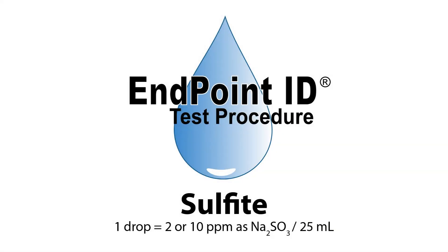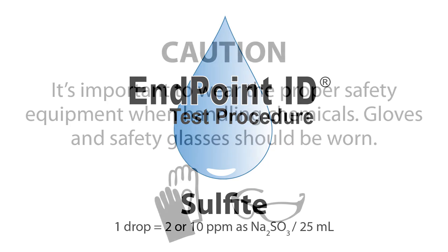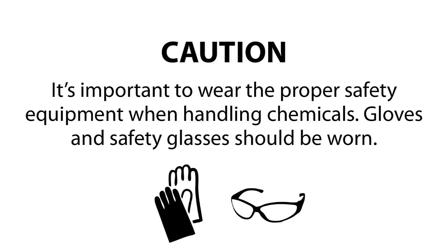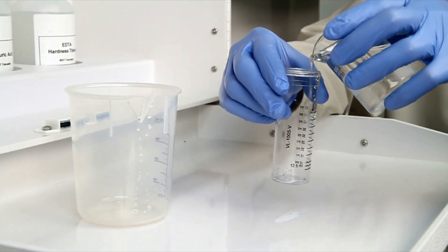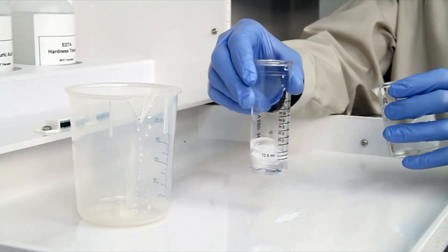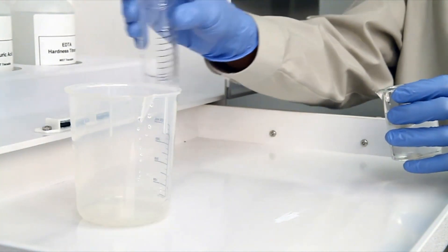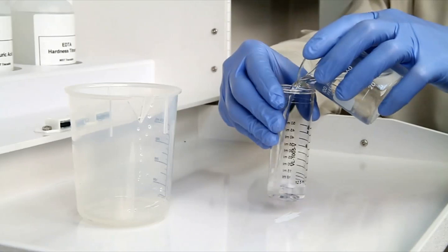This is a demonstration of a sulfite drop count test kit using endpoint ID procedures. The first step according to the endpoint ID procedure is to gather an accurate sample. The smallest change in sample size will lead to inaccurate results.